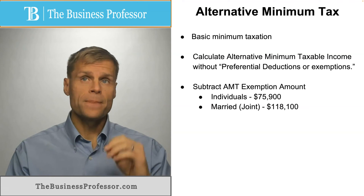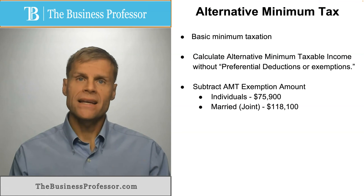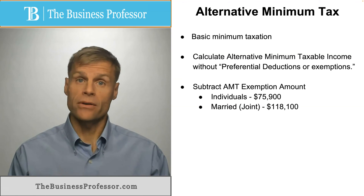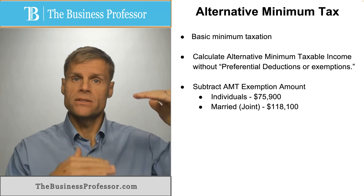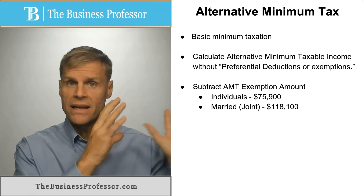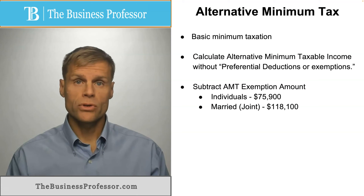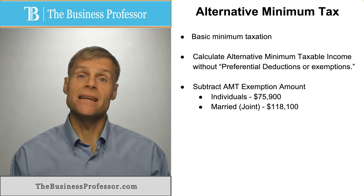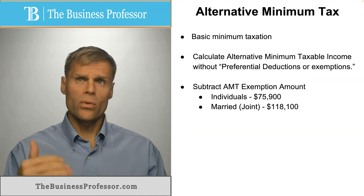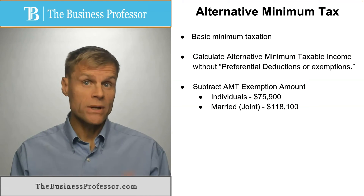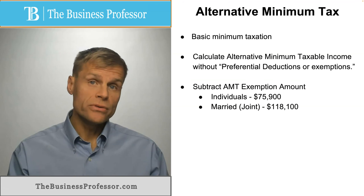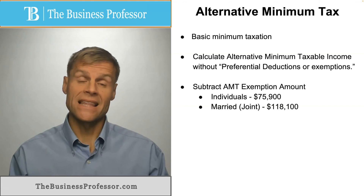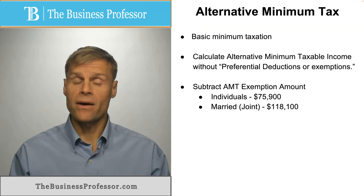After that, you subtract an exemption amount from your calculated taxable income. For an individual, you would reduce that by $77,900 — this is the 2023 amount. Or if you're married and filing a joint tax return, you would reduce your taxable income amount by $118,100 to arrive at an amount.